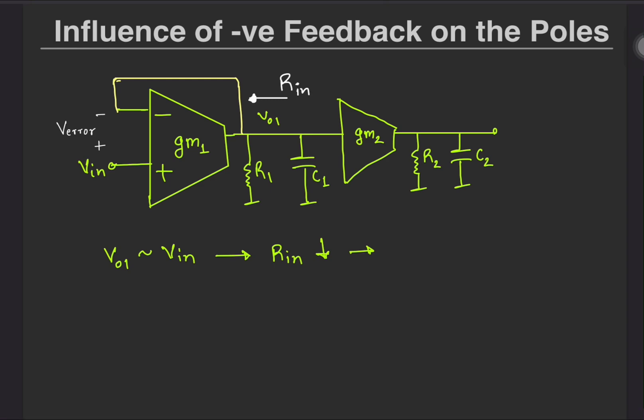So in conclusion, the negative feedback here fixes the voltage which reduces the output impedance and hence pushes the pole away.